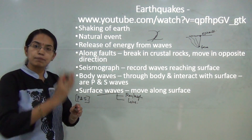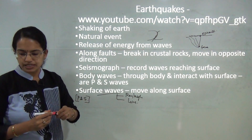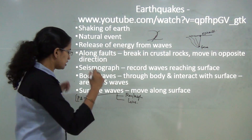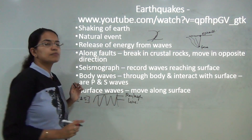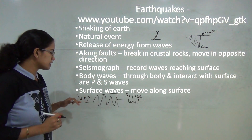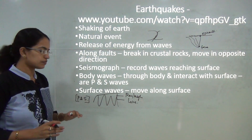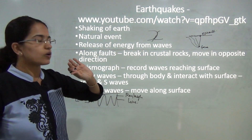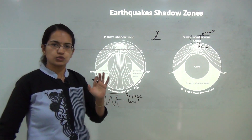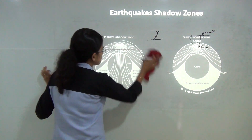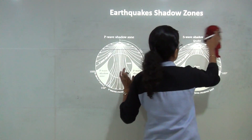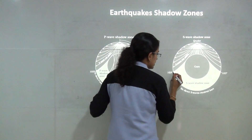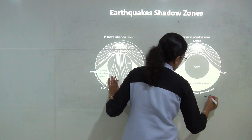S waves, or secondary waves, are perpendicular to the direction of propagation — like a thread tied at one end and vibrated, moving up and down. They are also known as transverse waves. A key characteristic of S waves is that they cannot pass through liquid; they can only pass through solid. As a result, all areas beyond 105 degrees become a shadow zone for S waves. Earthquakes are measured by an instrument called a seismograph.